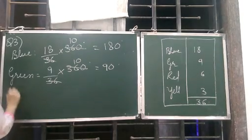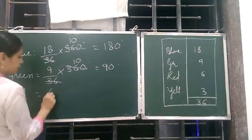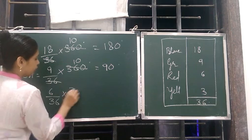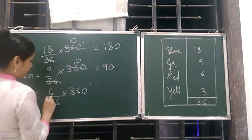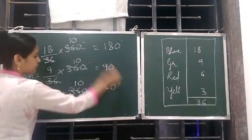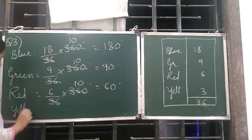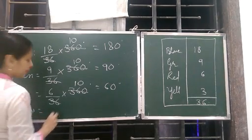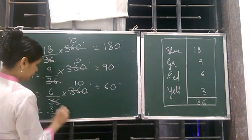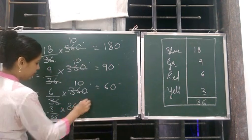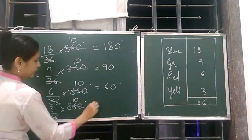Then red will be 6 upon 36 into 360 degree. This becomes 60 degree. Then yellow will be 3 upon 36 into 360 degree. 3 tens of 30 degree.